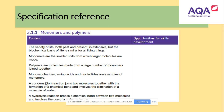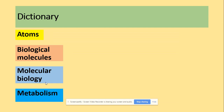We also need to know what condensation and hydrolysis reactions are. A condensation reaction joins two molecules together with the formation of a chemical bond, and involves the elimination of a water molecule. Hydrolysis is a reaction that breaks a chemical bond between two molecules and involves the use of a water molecule — water is added.